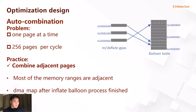During the practice, we encountered several problems and developed optimization designs. The first is auto-combination during the inflating process. The balloon driver only allocates one small page at a time and sends a notification every one megabyte, resulting in a huge number of pages in QEMU. The best approach is combining adjacent pages to create larger memory ranges in the balloon page table. Since the balloon driver is loaded very early and most memory is free, most ranges are adjacent. After the inflate process finishes, QEMU triggers a DMA map for all memory ranges outside the page table, reducing the number of DMA map operations.